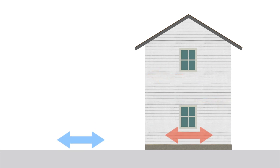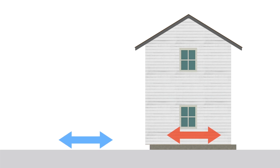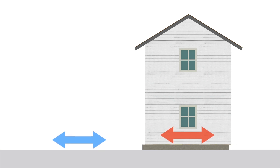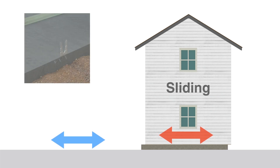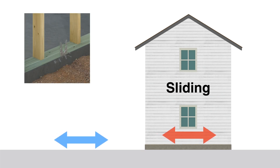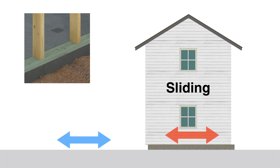If a house is not properly anchored, lateral forces can shake the house and cause it to shift off its foundation. This is called sliding. Sliding is resisted by attaching the wall framing to the foundation with mud sill anchors or anchor bolts.